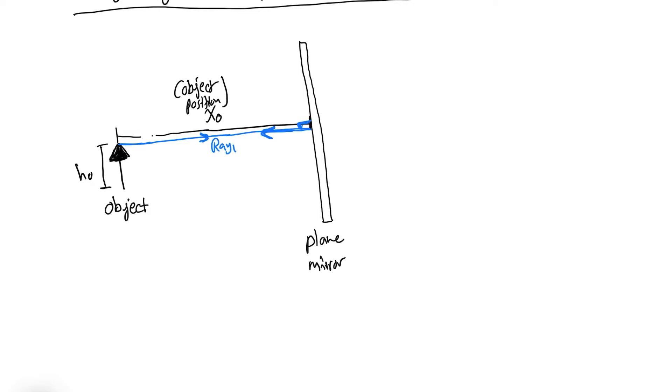If we extend ray number one, and then we take another ray, let's say this is ray number two, and based on the law of reflection the angle of incidence equals the angle of reflection. So this is ray number two, and this is the normal line. This is theta i, the angle of incidence, and this is theta r, which is the angle of reflection.